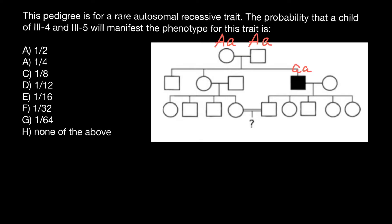Because this is a rare autosomal recessive trait, we have to assume that all people who are not descendants of this couple — who marry into this family — would be phenotypically and genotypically normal. So the genotype of this person and this person here is going to be capital A capital A.